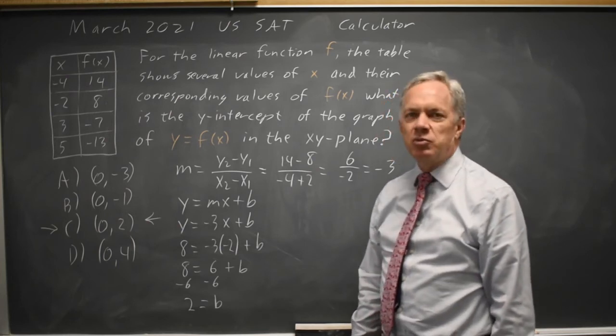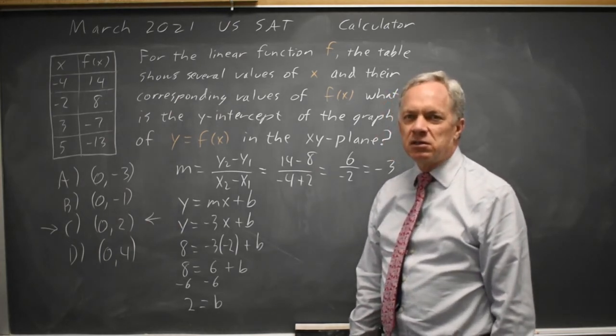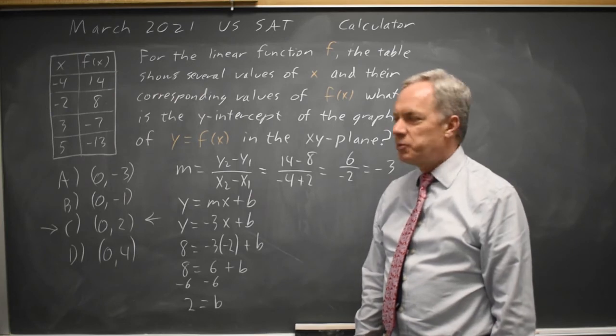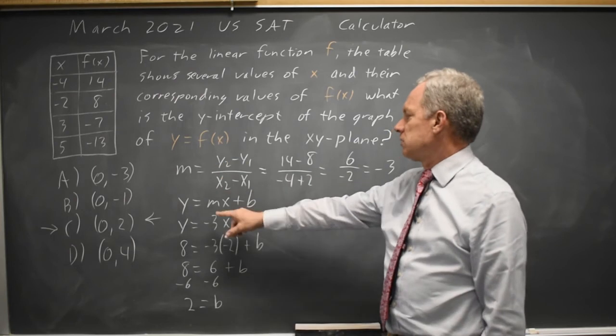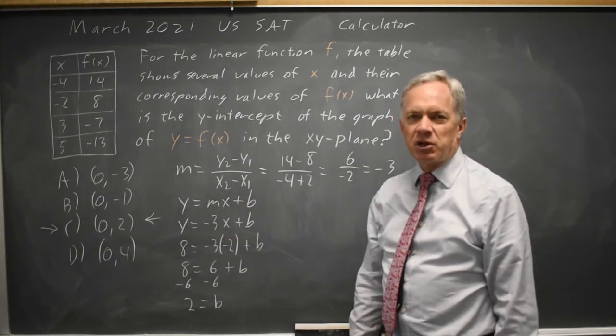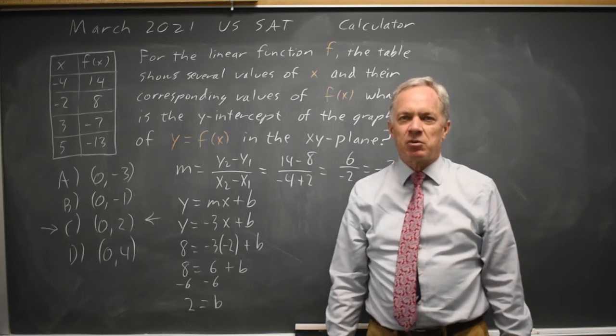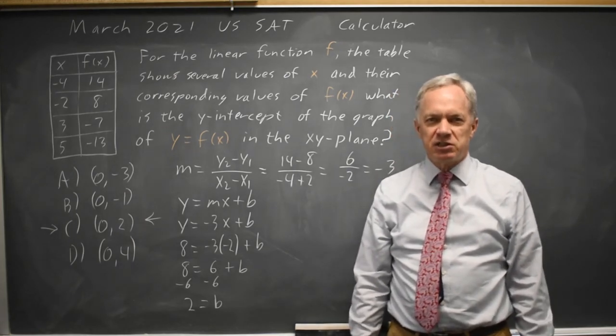If I had picked any other two points, the slope still would have been negative 3 and if I had picked a different point to solve for b, the intercept still would have been positive 2. So it doesn't matter which two you choose as long as you choose two distinct points.